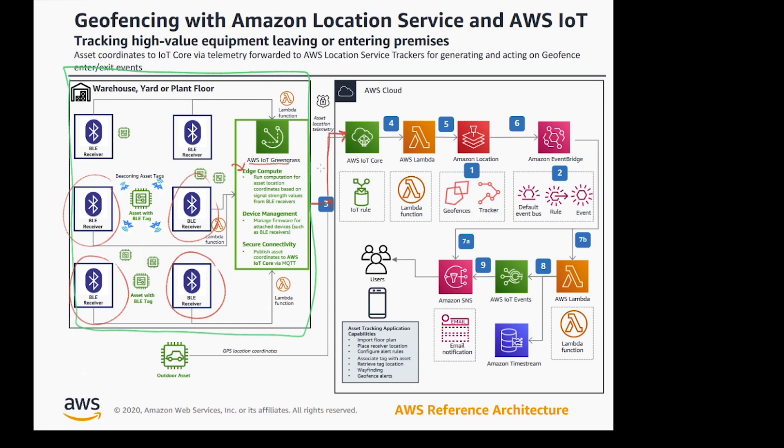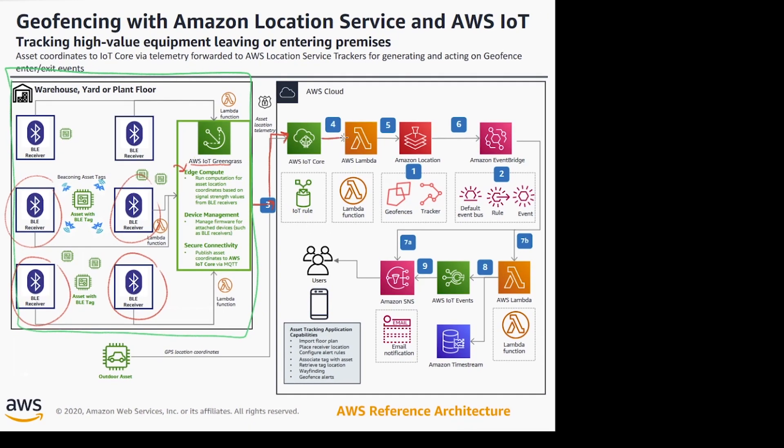All of that geocoordinate information is going into IoT Core, which is primarily the reporting mechanism for IoT devices. That's flowing into an AWS Lambda function that's doing some transformations, and then eventually that's going into Amazon Location, which is really where the polygon or location-based logic is taking place.